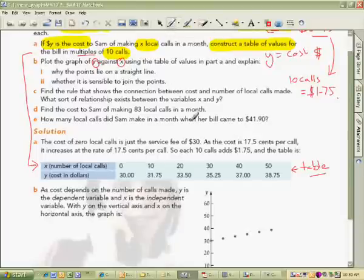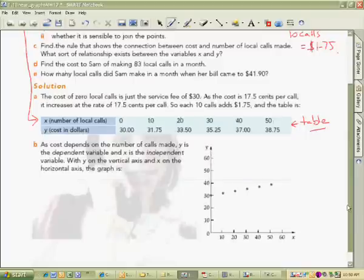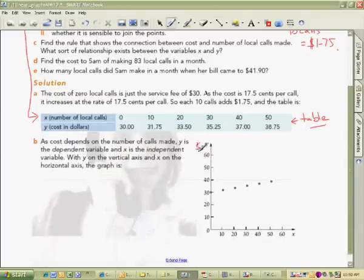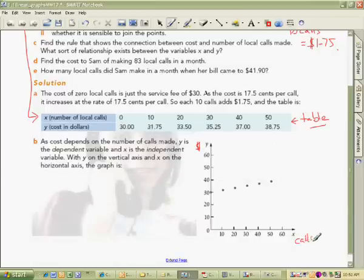Alright, so there we just take the graph of these values here and we put in Y equals, my pen's gone all wonky, Y equals there, so that's the cost. This is wrongly done, this graph. Can you see why? Because you always need to put units. So the cost is in dollars, it should say so. And X, that's the calls, number of calls. So you need to have that written on there.